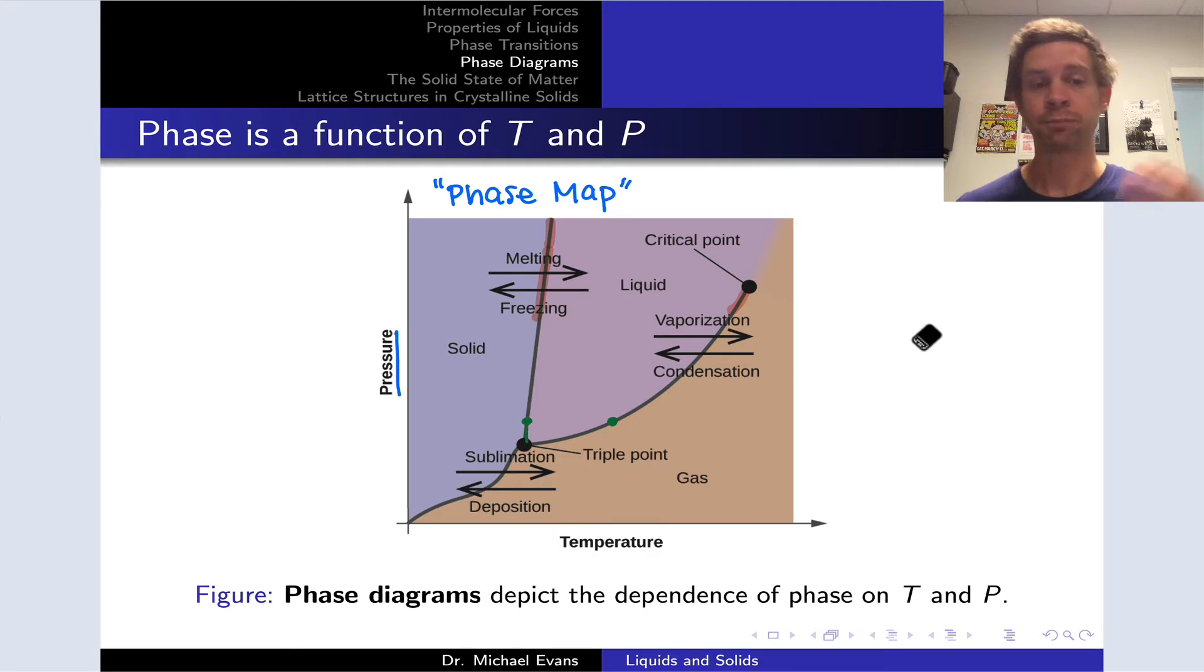We have pressure on the y-axis and temperature on the x-axis, sort of like latitude and longitude on a map. The phases occupy regions or territories of the map at various combinations of temperature and pressure. For example, we have solid, liquid, and gas regions in this phase diagram, and these are the possible phases of matter for this substance.